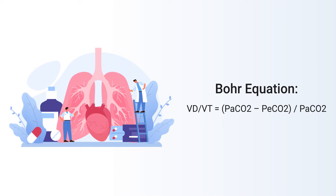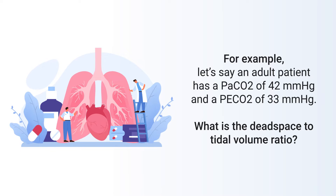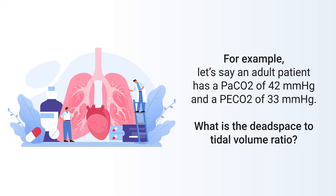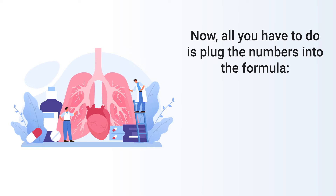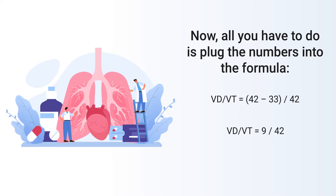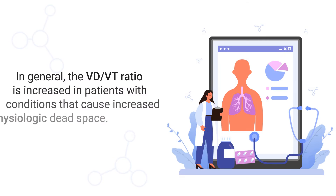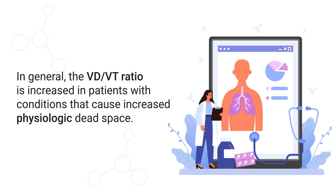You may have heard the equation pronounced PaCO₂ minus PeCO₂ over PaCO₂, which is just an easier way to remember it. Now let's do an example. Let's say an adult patient has a PaCO₂ of 42 and a PeCO₂ of 33 — what is the dead space to tidal volume ratio? All you do is plug the numbers into the formula: 42 minus 33, divided by 42. The dead space to tidal volume ratio for this patient is 0.21, or 21 percent.